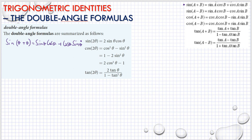So, since these two terms are equal, we have 2 sine theta cosine theta. Then we have proven that sine 2θ is equal to 2 sine theta cosine theta.